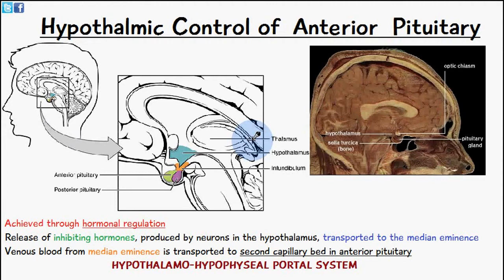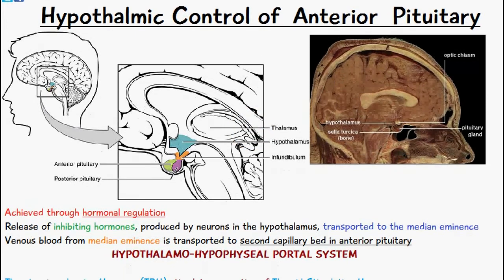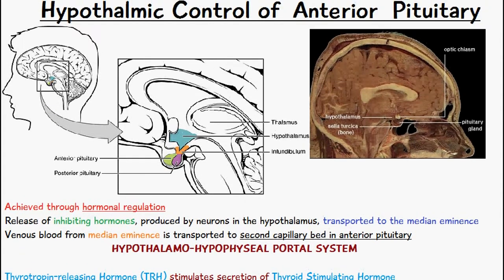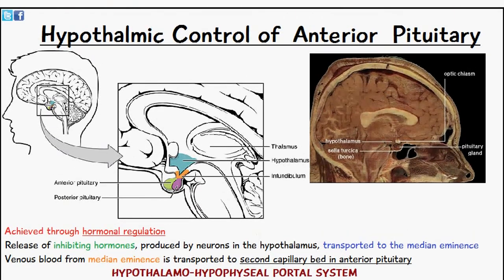Welcome to 5-Minute School. In today's video we're going to talk about the hypothalamic control of the anterior pituitary gland. In the last video we mentioned the fact that the anterior pituitary gland produces and secretes its own hormones, but there is some hormone regulation from the hypothalamus.